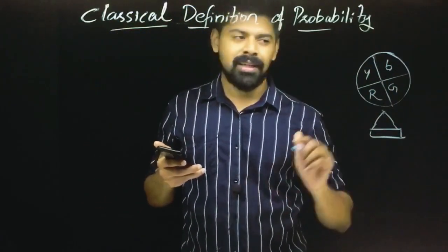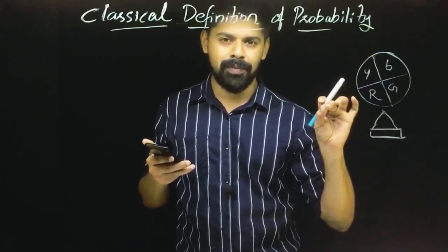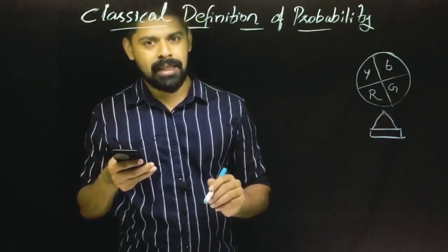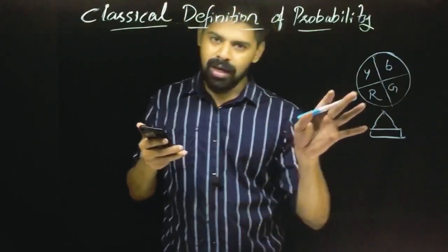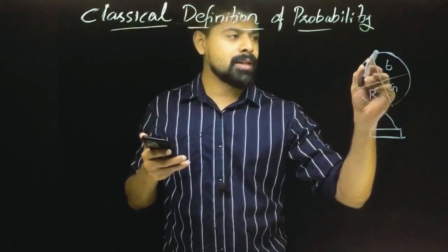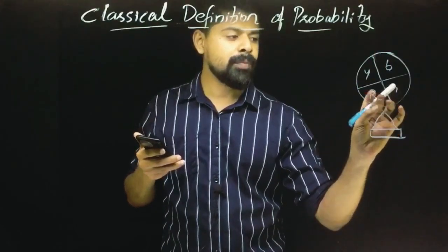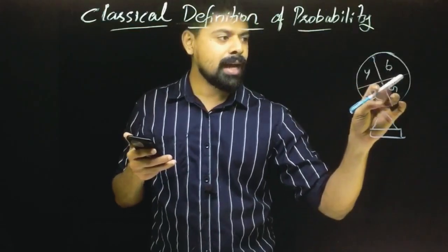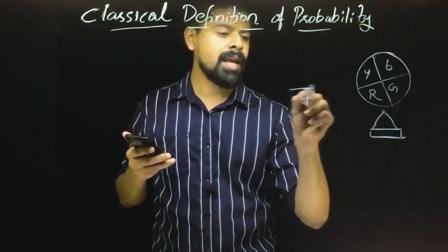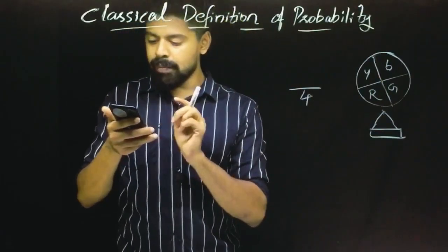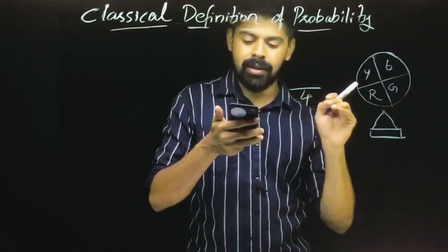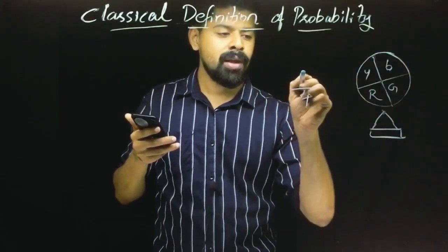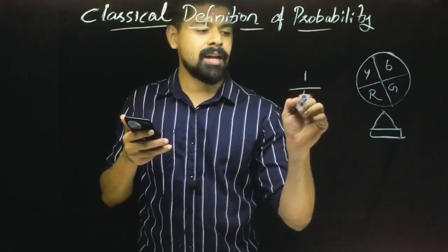What is a random experiment? This is a random experiment. The blue one is one sector out of four. All the other sectors include red, and we are talking about the 4th sector. If we are talking about blue, it is one out of 4 sectors.